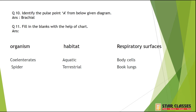Question 10: From a diagram in the PDF, identify the pulse point A — that is the brachial artery. Question 11: There is a chart where you must fill in each organism's habitat and respiratory surface. Cnidarians are aquatic and use their body cells for respiration. Spiders are terrestrial and use book lungs — this full chart is given in the textbook.